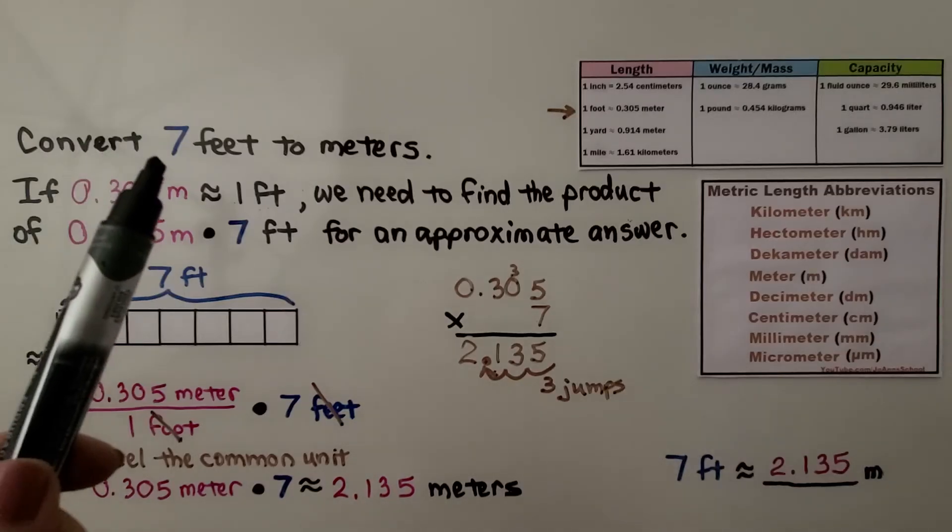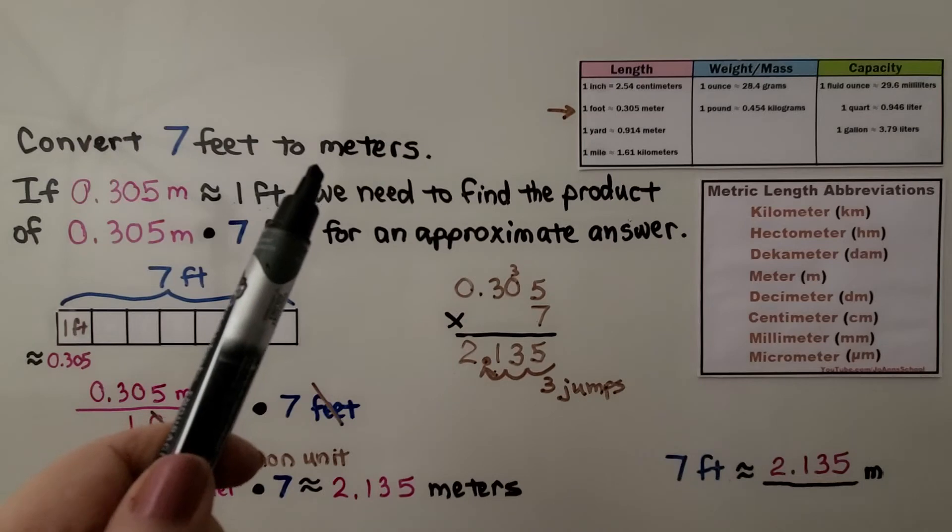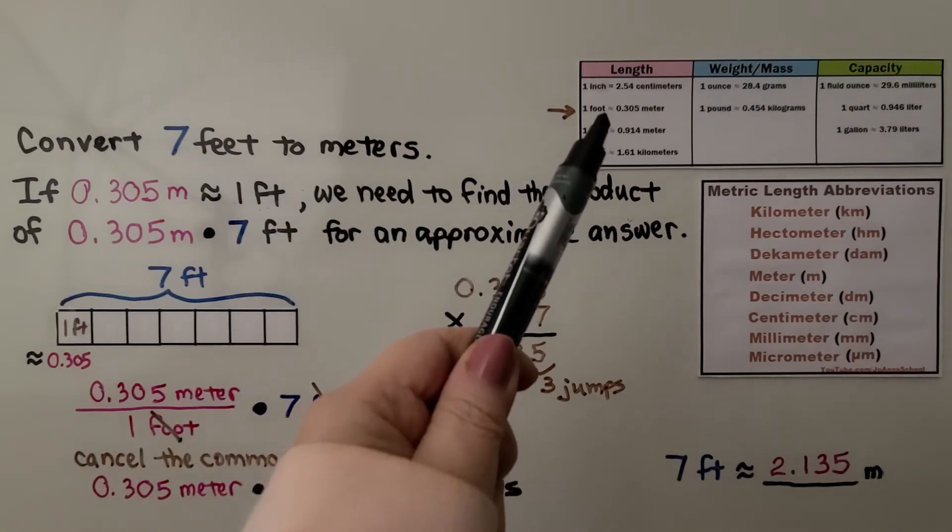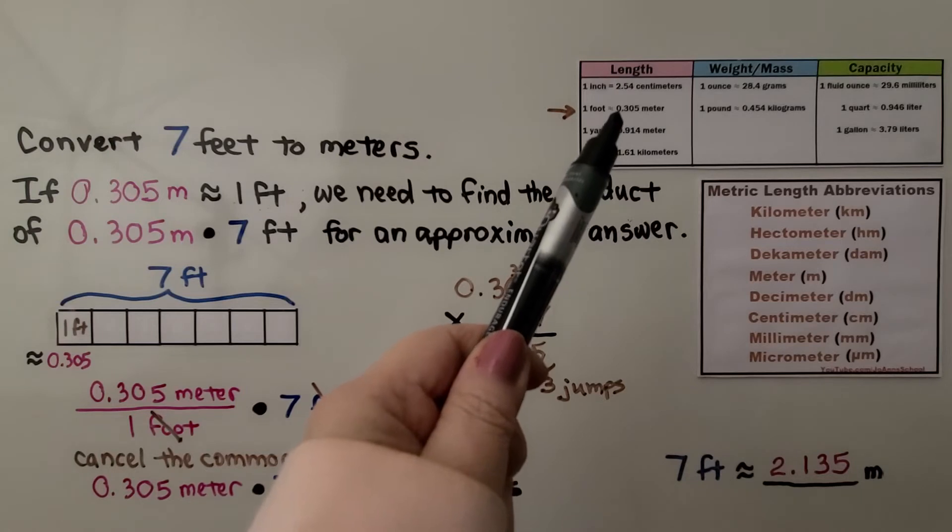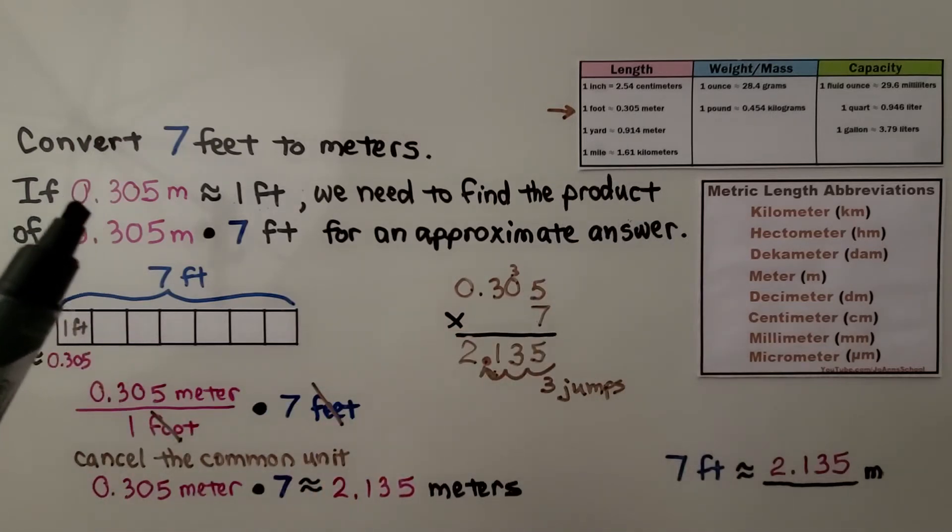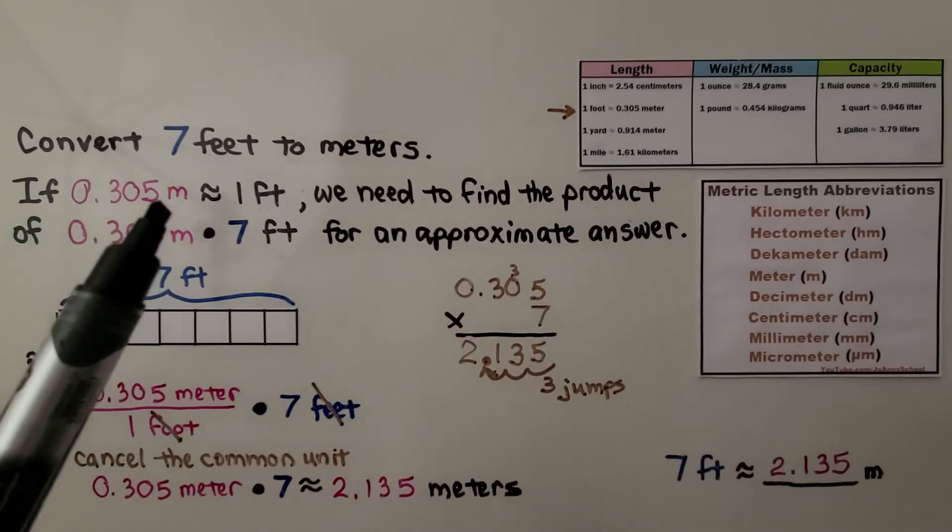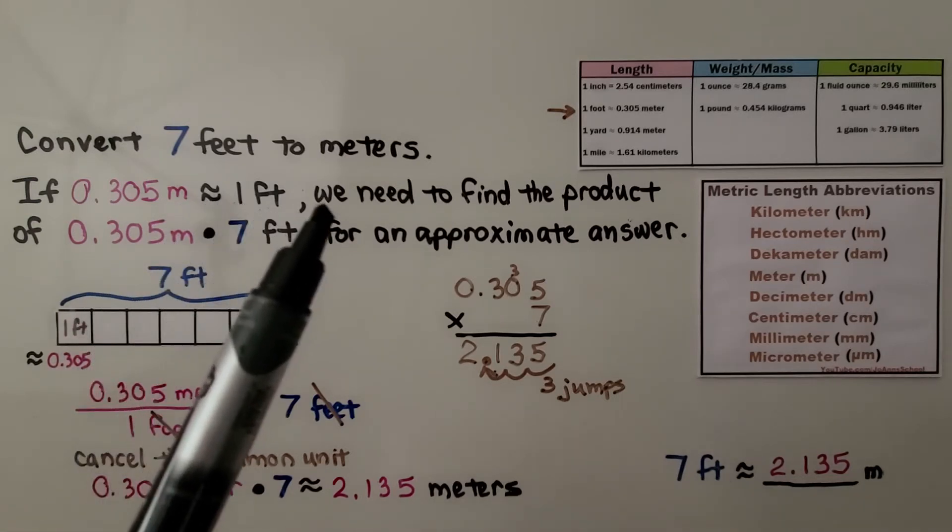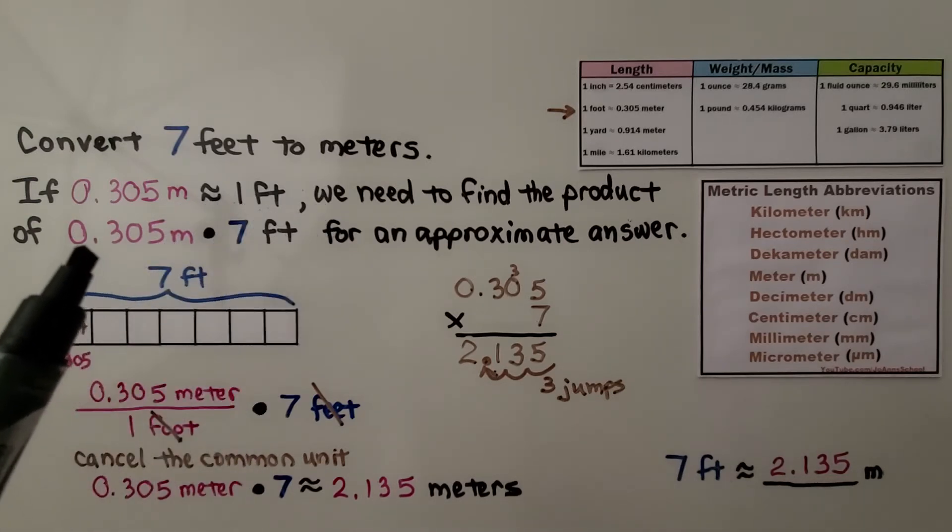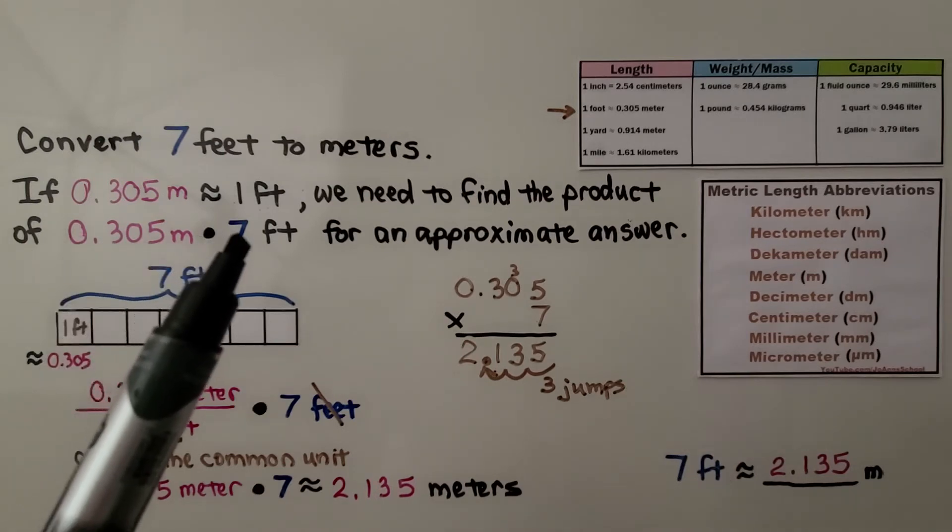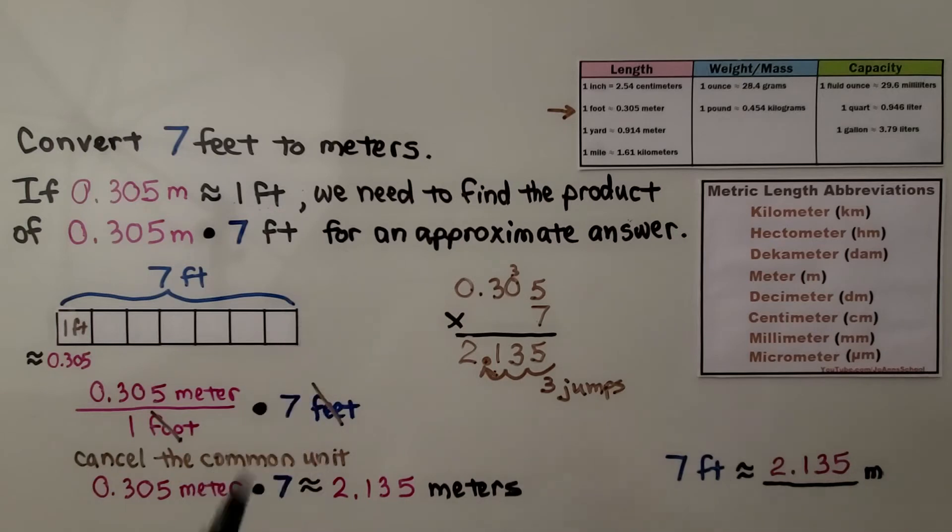Here it's telling us to convert 7 feet to meters. We see in our chart that 1 foot is equal to 0.305 meters. If 0.305 meters is approximately 1 foot, we need to find the product of 0.305 times 7 feet for an approximate answer.